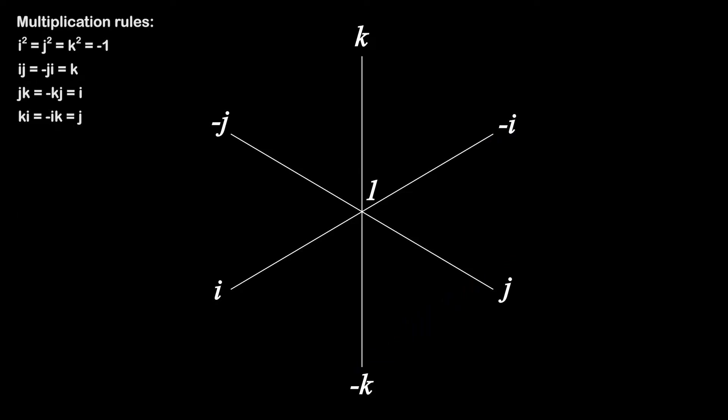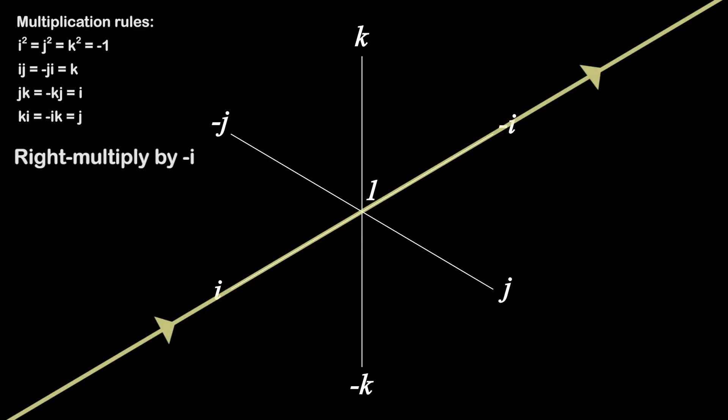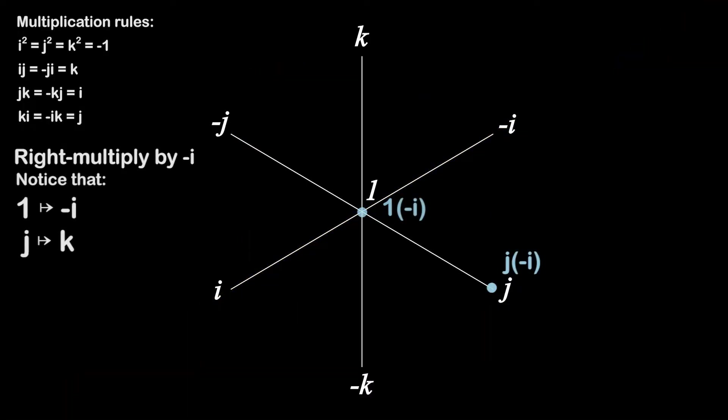But now, let's try something a little crazy. What if we right multiply by minus i? Well, remember, right multiplying only rotates the opposite direction than left multiplying when you're multiplying two different fundamental quaternion units. So the circle that passes through 1 and i will be unaffected by switching to right multiplication. But the circle passing through j and k will now rotate the opposite direction. So now, 1 gets mapped to minus i, still, and j gets mapped to positive k.